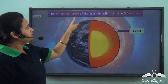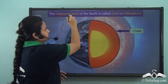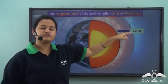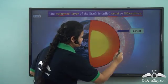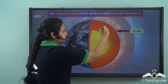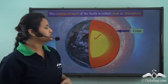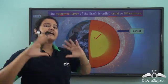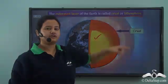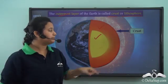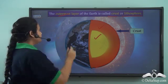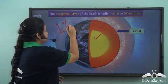The solid outermost layer of the Earth is called the crust, or lithosphere. This crust comprises the exterior part of the Earth, and there are two other layers present below it. The crust is very thin compared to the other two layers — in fact, it comprises only one percent of the Earth's total volume.